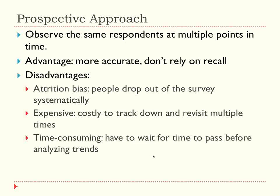There are two ways to collect panel data. One is the prospective approach — we revisit the same individuals forward in time, starting with a baseline and moving forward. For example, I could survey someone on their income today, then visit them every month to see their income over time. That's very advantageous for accuracy and validity because you're not relying on memory, or at least only asking them to remember the past 30 days instead of 20 years. But there are significant disadvantages.